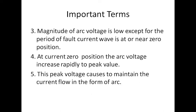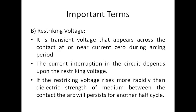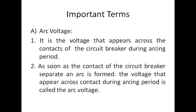The magnitude of the arc voltage is low, except for the period when the fault current wave is at or near zero position. At the current zero position, the arc voltage increases rapidly to a peak voltage. This peak voltage acts to maintain the current flow through the full arc. When the contacts get separated, the arc will form between them, and the voltage responsible for maintaining the arc is known as the arc voltage.